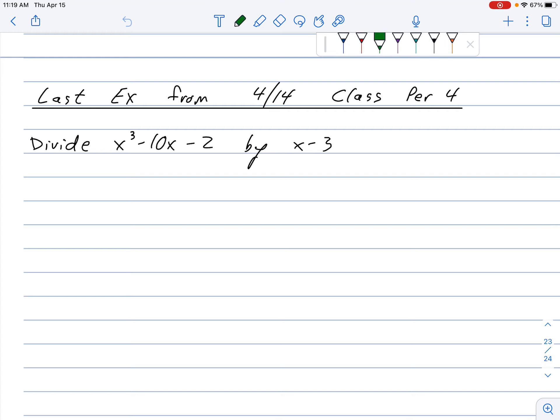So, as we've seen, I'm going to do it by synthetic division. But as we've seen, this right here is the factor that we're dividing by. What is the zero that comes out of that factor?